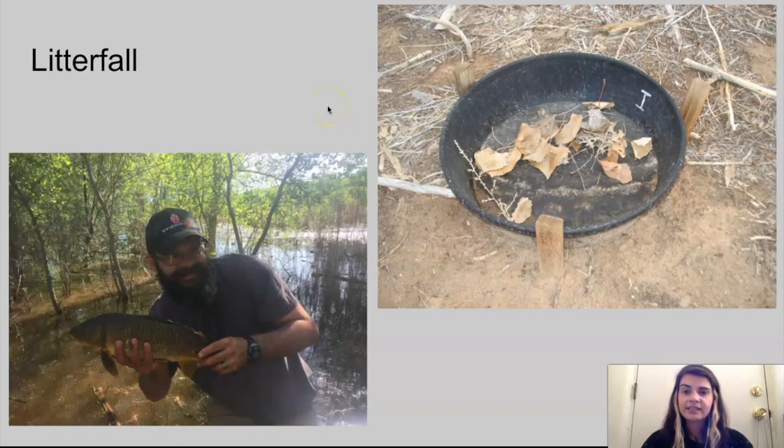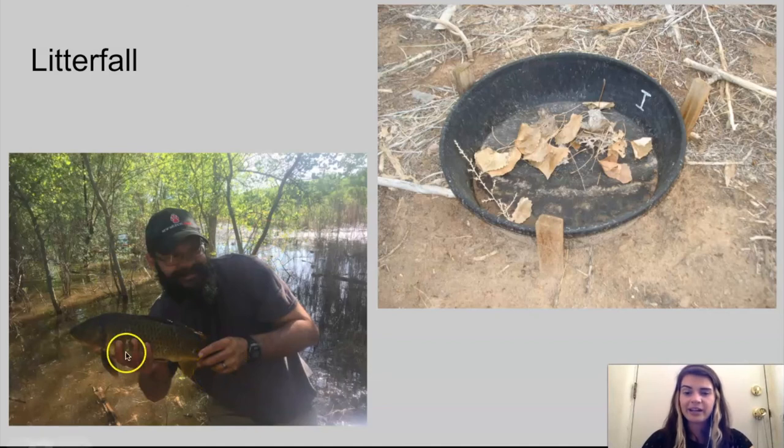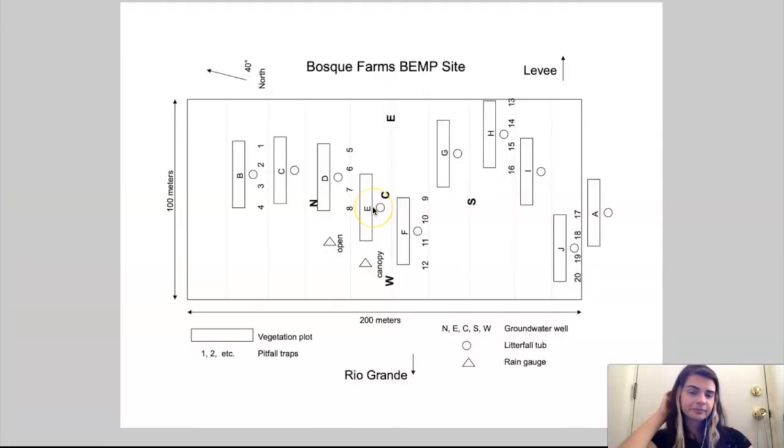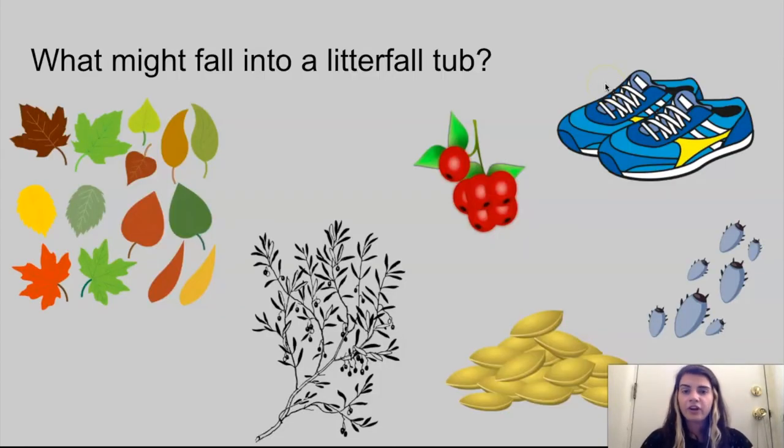Our last data set is litterfall. This is what our litterfall tubs look like. They're just these big black bins and they collect any plant material that falls from the plants above them. We'll get into this picture in just a moment of why my coworker Matt is holding a fish. At each site we have 10 litterfall tubs and they're labeled A through J. Every site has 10 of them.